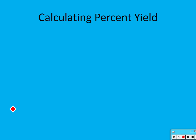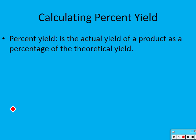Percent yield — you're supposed to write down the definition for percent yield. Percent yield is the actual yield of a product as a percentage of the theoretical yield. It is the actual yield of a product as a percentage of the theoretical yield.